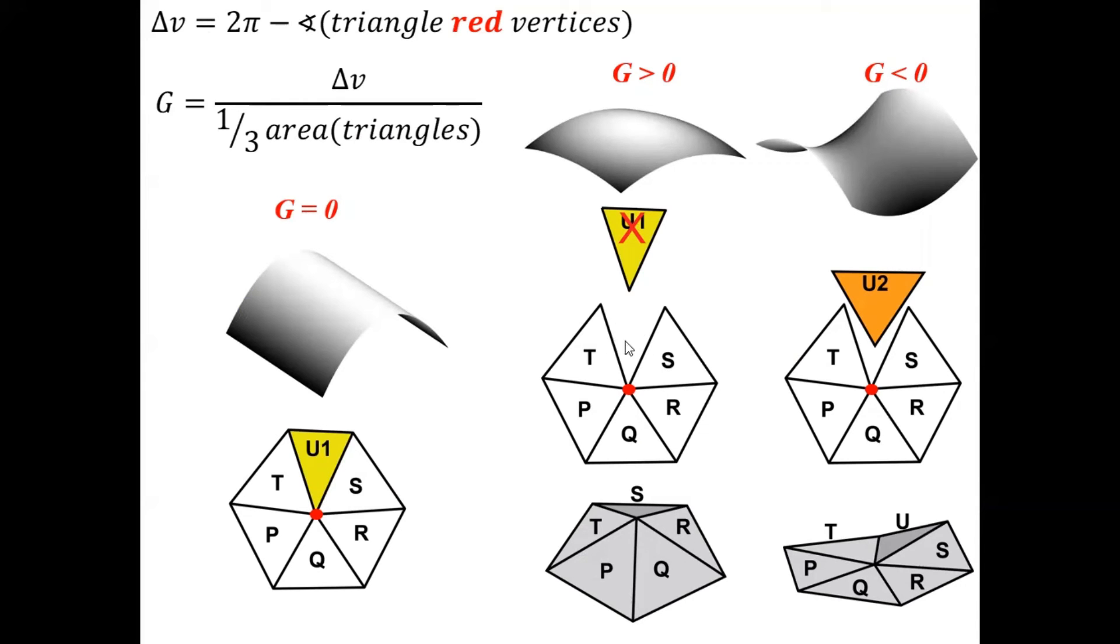So here we have the missing angle, and that's why delta V has a positive value and also the Gaussian curvature.